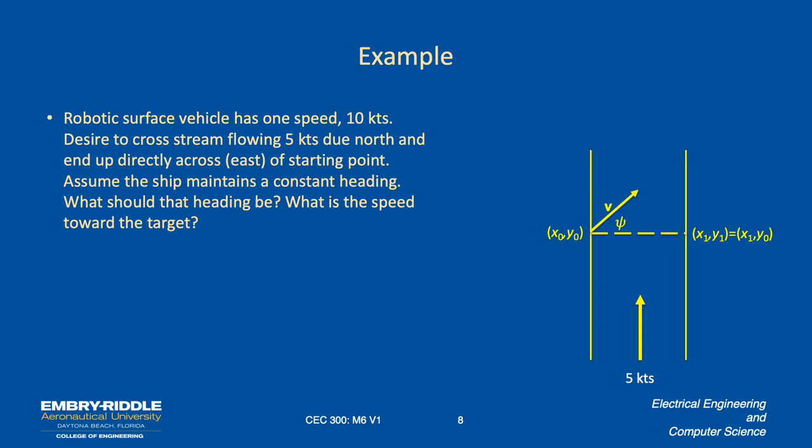Here's a problem where we can employ that. We've got an unoccupied surface vehicle, a robot. It only goes 10 knots - you turn it on, it goes 10 knots whatever direction you point. No thrusters, no heading control, it just goes 10 knots forward. It goes forward very successfully, it doesn't meander. And you want to cross a stream that flows 5 knots to the north, and we want to end up on the other side directly across from where we are. We need to figure out the angle psi to put it in the water with so that we can get it to the other side directly across where the y component y1 is equal to the original y component but the x component is the x on the other side.